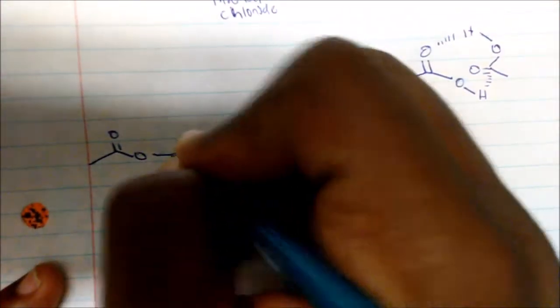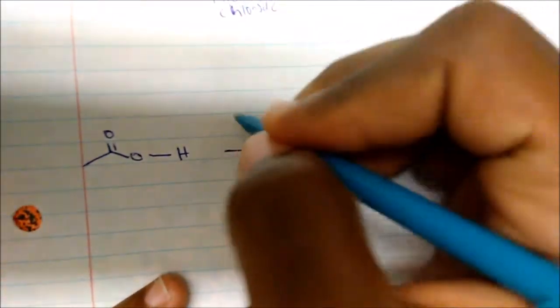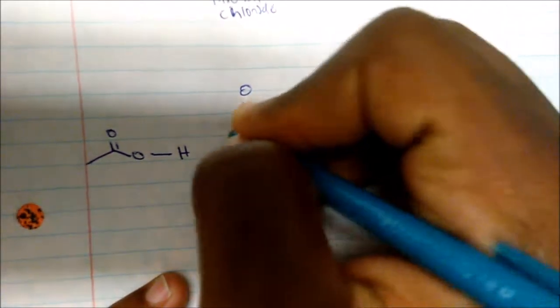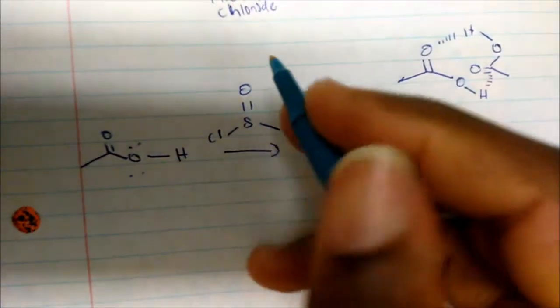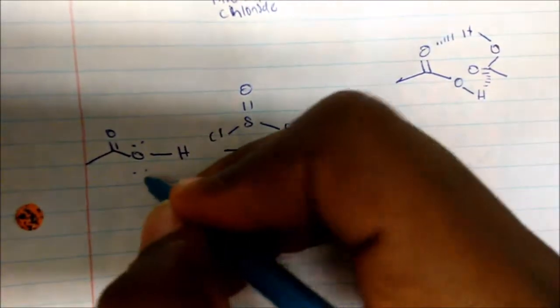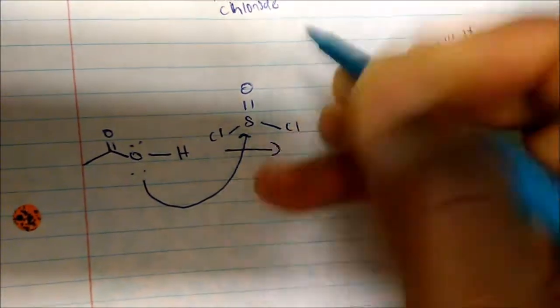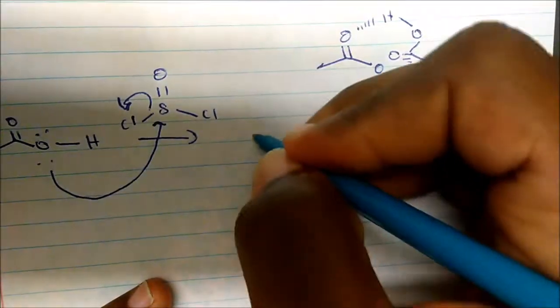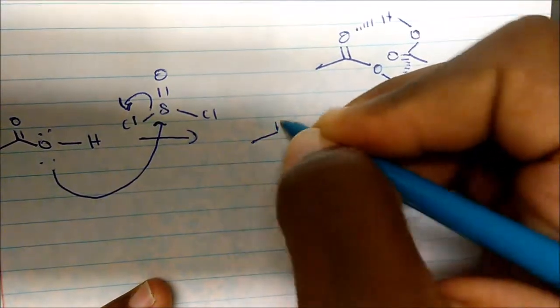Acetic acid looks something like this. SOCl2, thionyl chloride, actually has an oxygen double bonded to a sulfur with two chlorine atoms. So what's going to be your nucleophile in solution? Lone pairs on oxygen will actually attack the sulfur atom and displace the chlorine. But once that happens we form something that looks like this.